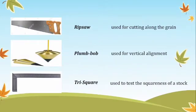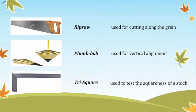Next is rip saw — used for cutting along the grain. A rip saw is a coarse-toothed saw used for straight cuts in lumber with the grain of the wood. Next, plumb bob — used for vertical alignment. Next is trisquare — used for testing the squareness of a stock.